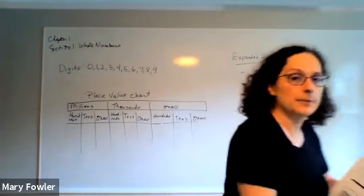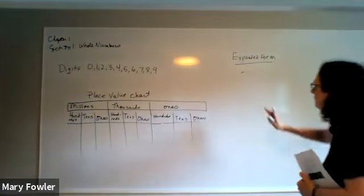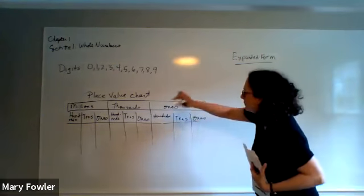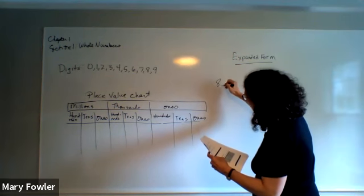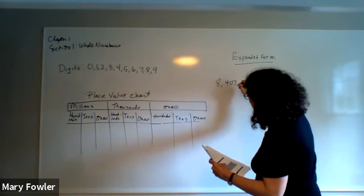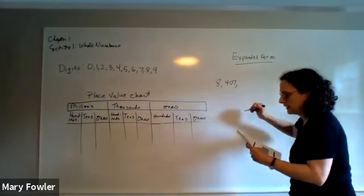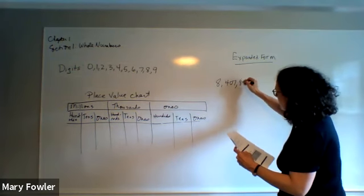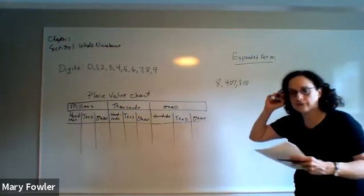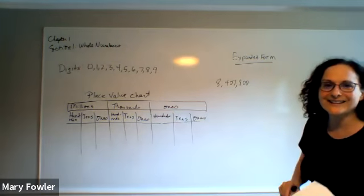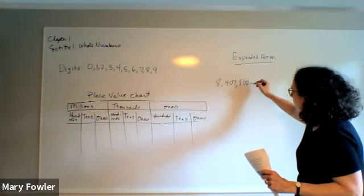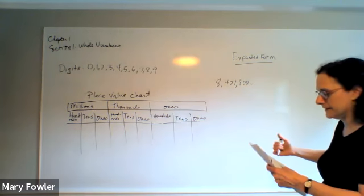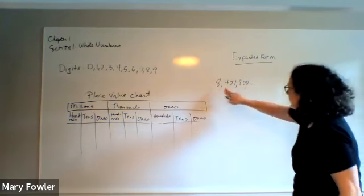And this is a number that has a lot of periods to it, right? A lot of chunks. It's 8,407,800.